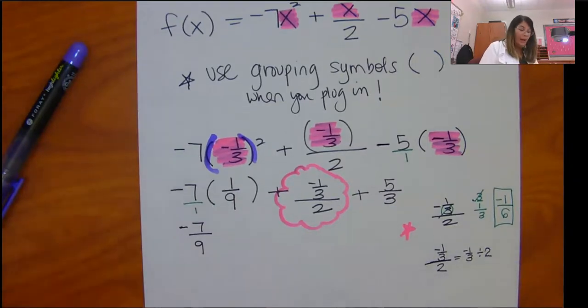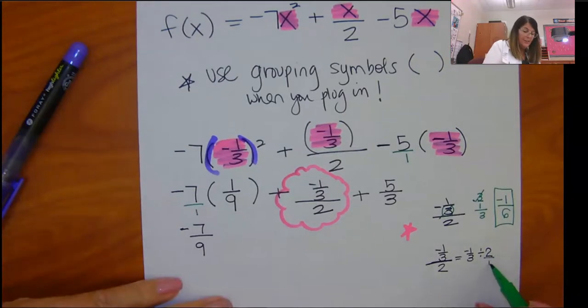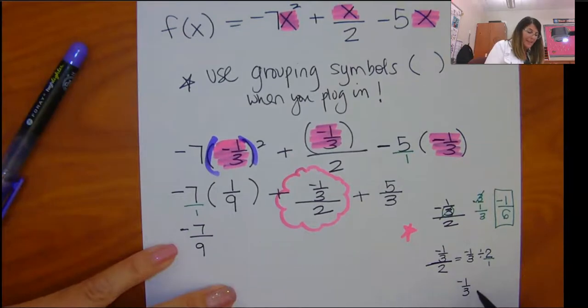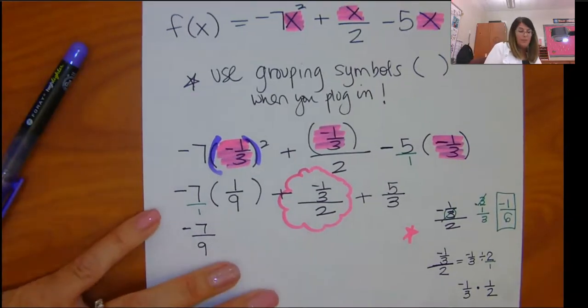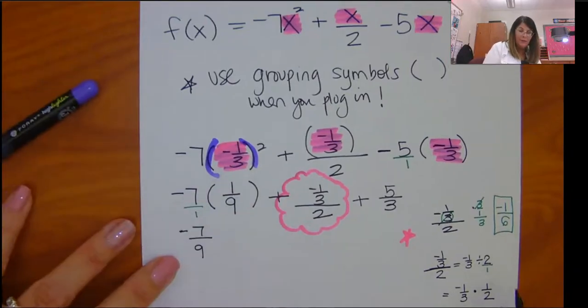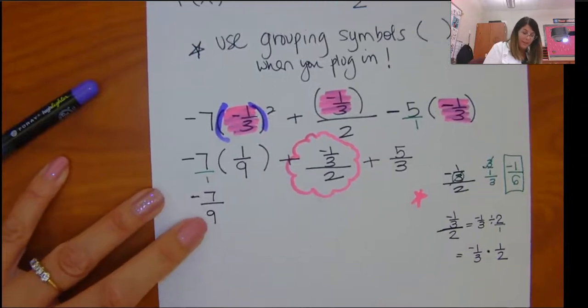So I could rewrite this as negative 1 third times 1 half. Remember when you were dividing fractions, what you're doing is you're multiplying by the reciprocal. You flip the second one. So then this becomes negative 1 sixth.